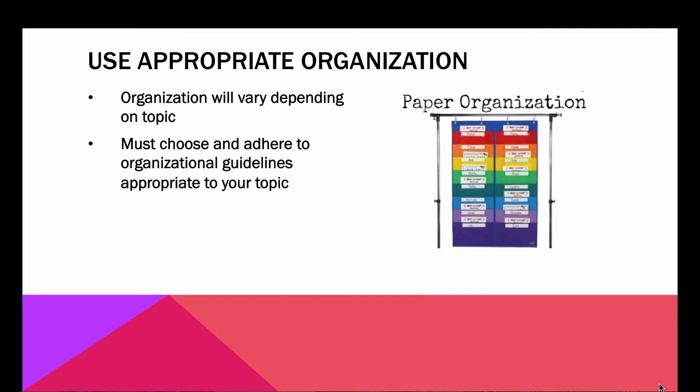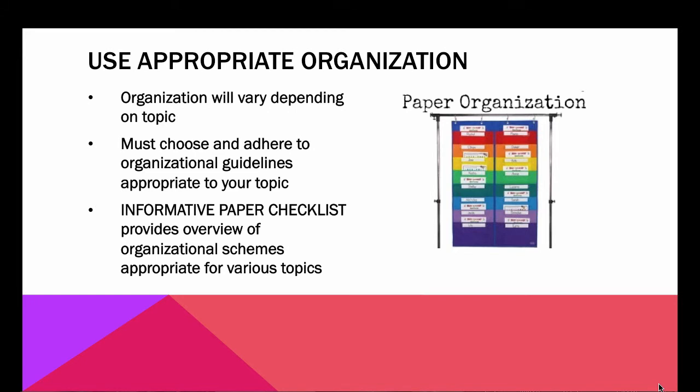You have to choose and adhere to the organizational guidelines that are appropriate for your topic and audience. The informative paper checklist — there is a link to it on this week's assignment page — gives an overview of the different organizational schemes appropriate for various topics. You should probably go ahead and look at the organization section of the informative paper checklist right now to make sure you have at least some idea of how you're going to be organizing your paper, because that might influence your research process.